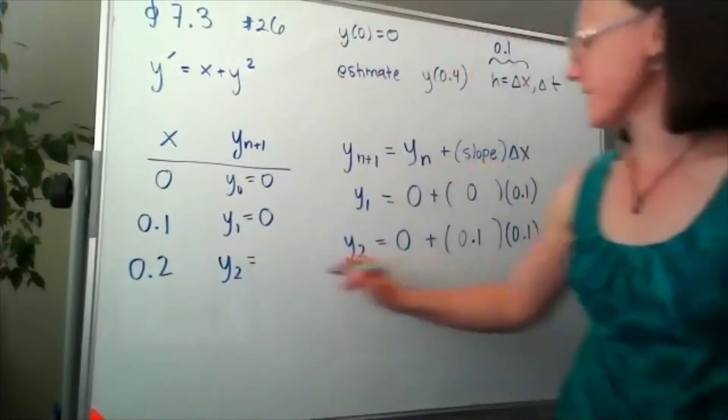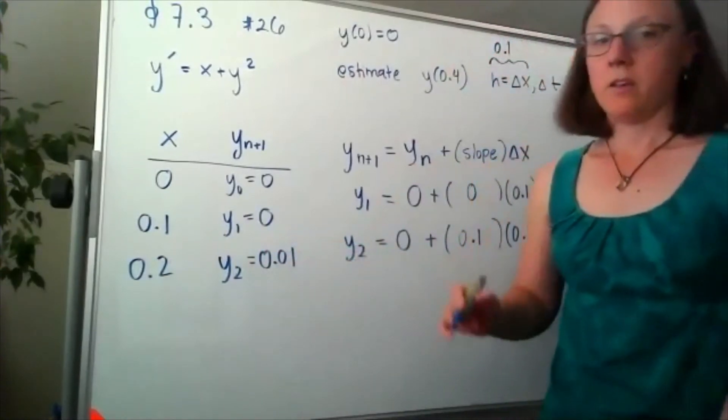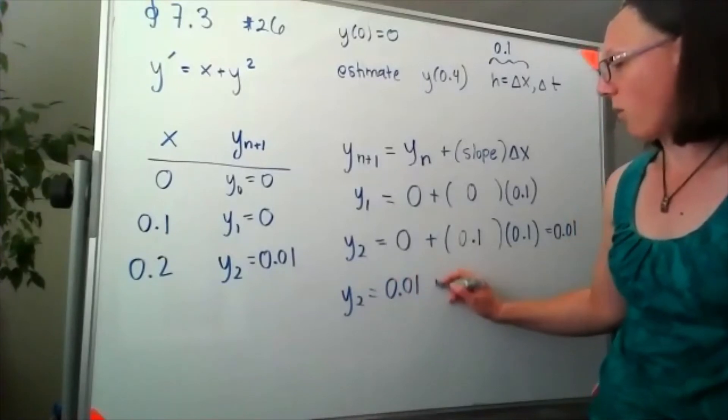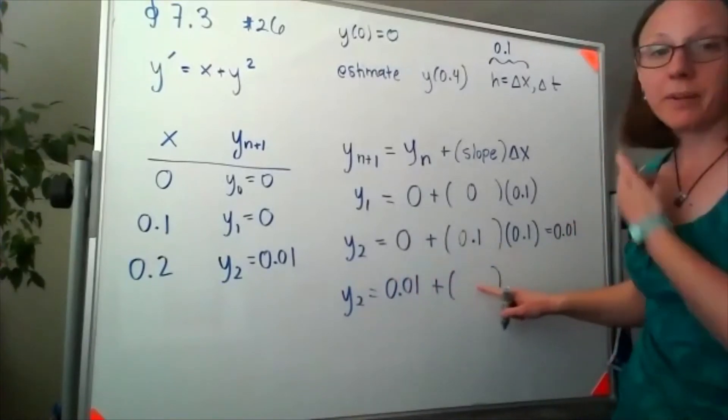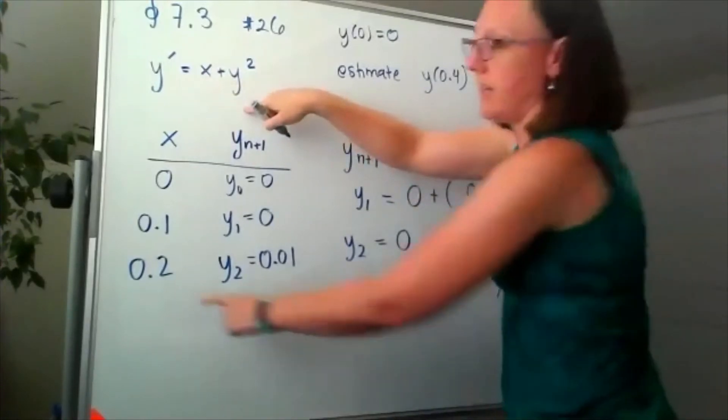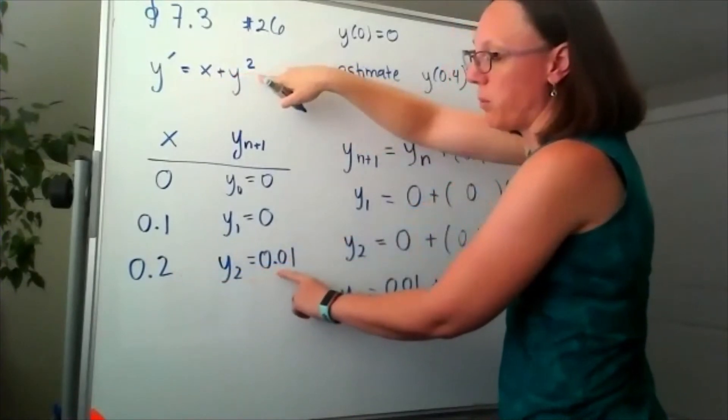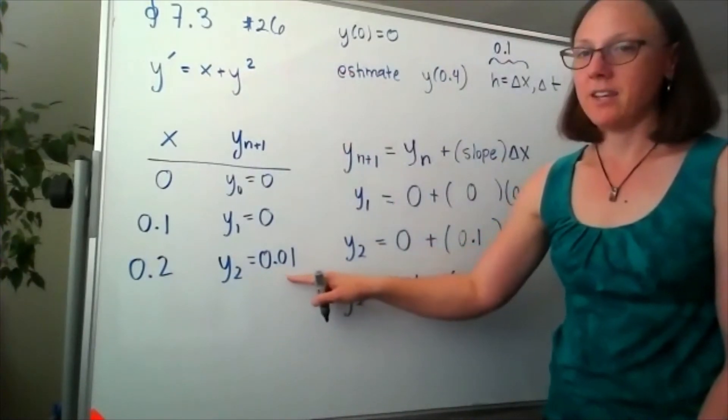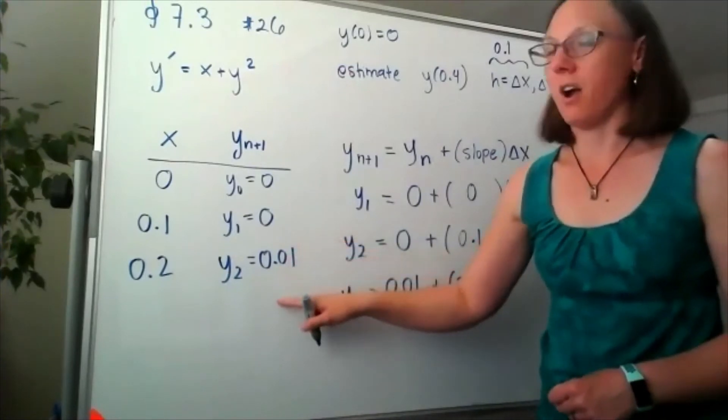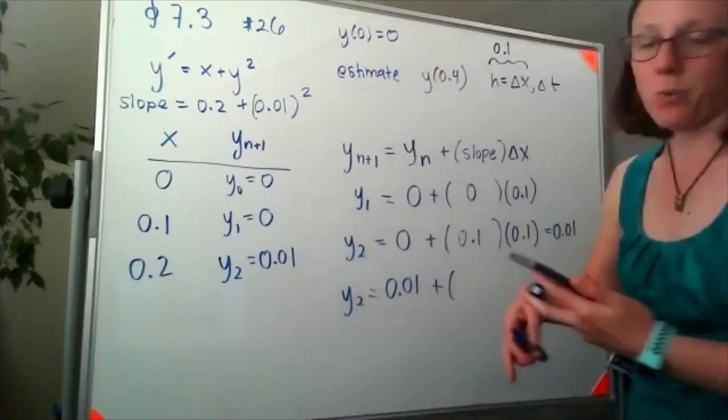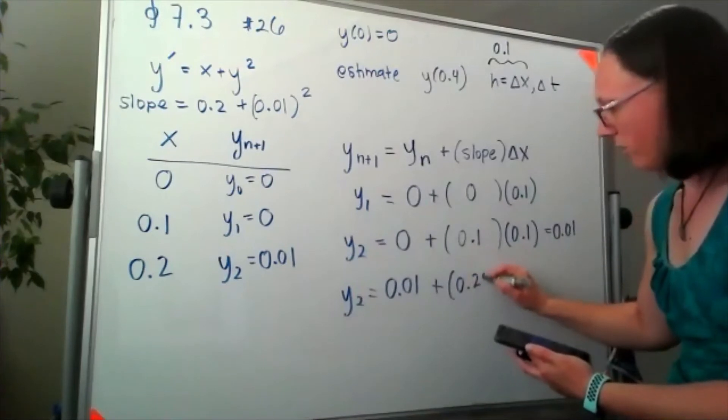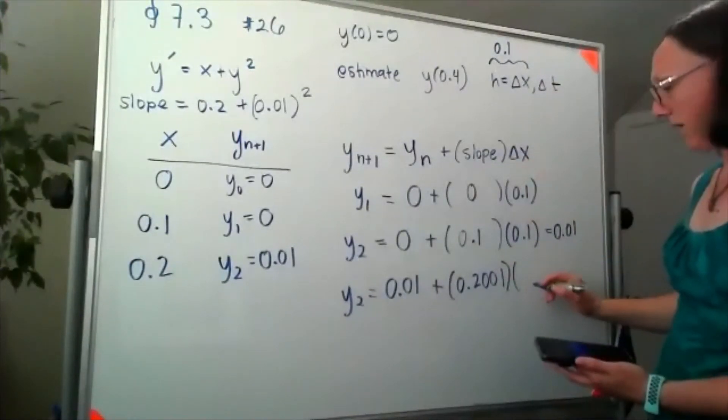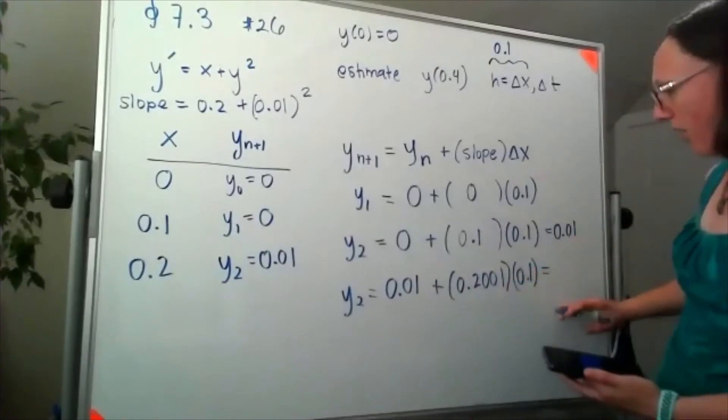To get my next y value, I'm going to take where I'm standing, so I'm standing at 0.01, and I'm going to add to that my slope. I'm going to get this slope by looking at my differential equation. I've got an x value of 0.2 and a y value of 0.01. When I square this, this is one over a hundred. I've got 0.2001 times my delta x. My time step is still 0.1, so overall that's going to give me a new y value of 0.03001.